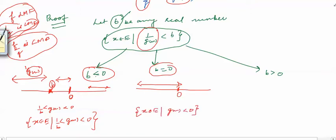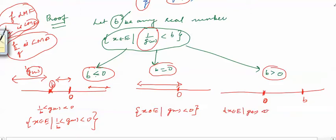When b is greater than 0, we want 1/g(x) < b. Here 0 and b are on the right side, and the set can be written as { x ∈ E : g(x) < 0 } union { x ∈ E : 1/g(x) < b }. We have separated these two parts.